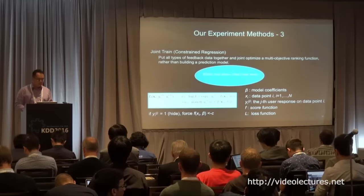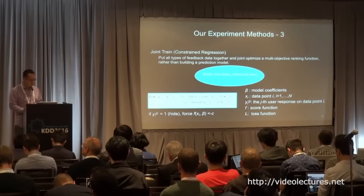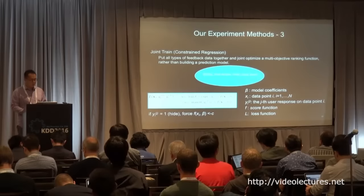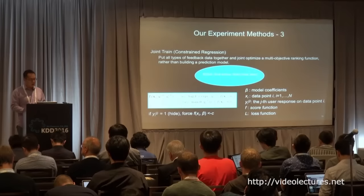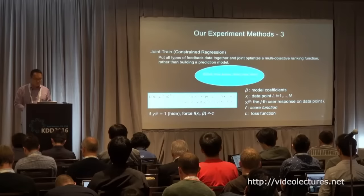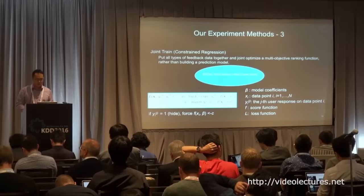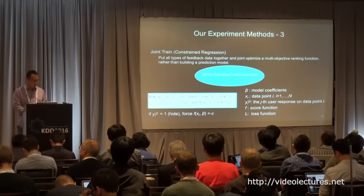The third method is joint training. For different signals, we can define different loss functions and build a combined loss, then optimize that combined loss. For example, for click and hide: we put a logistic loss to fit the click data for CTR prediction, and we put a hinge loss to force hidden items to have a very low ranking score. The final loss function is a linear combination of the two, and you can choose the weights W1 and W2 as a trade-off between how you treat the two losses.